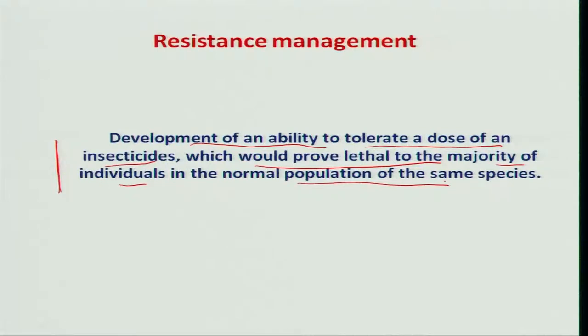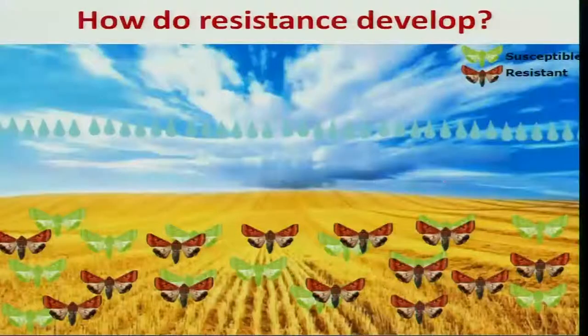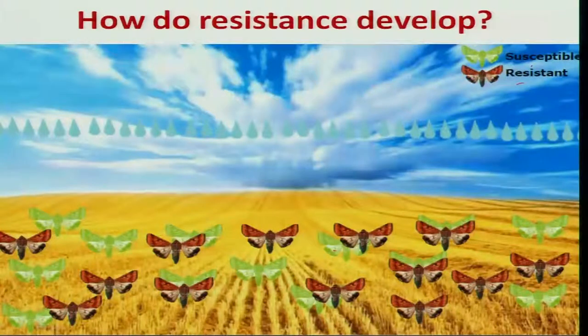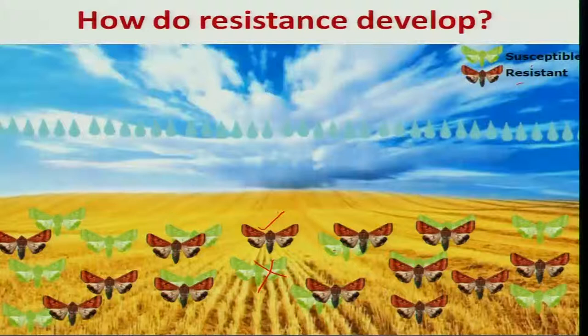Of the same species, in general, when you repeatedly apply a particular pesticide, automatically the same species will develop some sort of tolerance to overcome that particular dosage and cause economic damage, which can be clearly explained with this slide photograph. You see here both the susceptible ones and the resistant ones in this agro ecosystem; when you spray a particular insecticide, the susceptible ones keep on being eliminated and only the resistant ones remain.